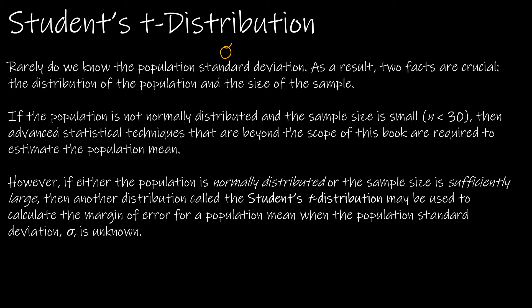If we have a population that's not normally distributed and the sample size is too small, we don't know enough about statistics in this course to estimate the population mean. However, if either the population is normally distributed or the sample size is sufficiently large, we can use something called the Student's t-distribution, which is another continuous probability distribution.